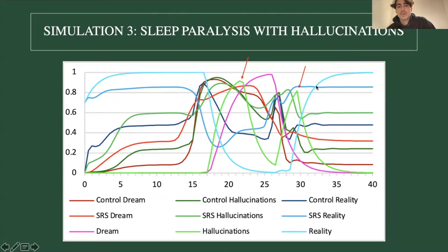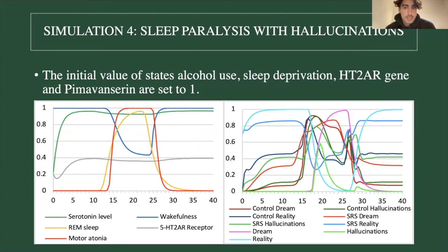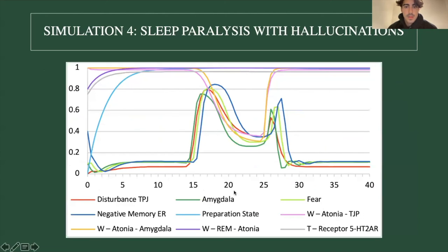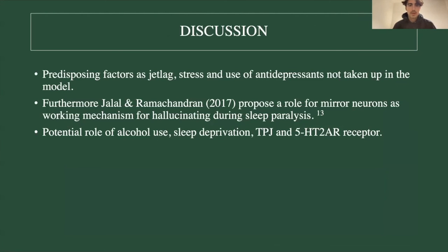In the fourth simulation, pimavanserin is also set to one. The medicine counteracts the effect of the 5-HT2R receptor, bringing activity back down to a level similar to the second scenario. Hallucinations come up a bit but are still less likely to be experienced than dreams or reality, and while there are again peaks of disturbance at the temporal parietal junction, this does not lead to a high likelihood of hallucinations.